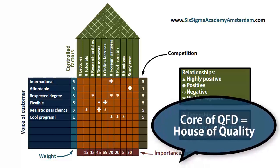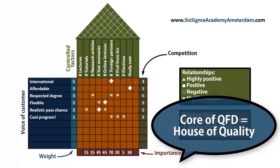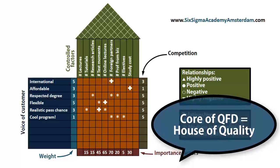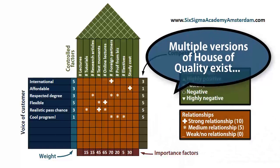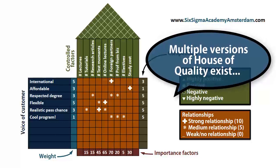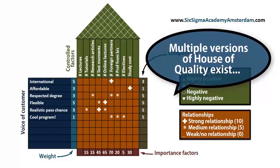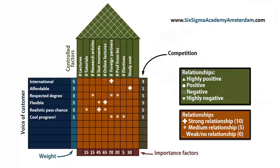Why is it called the House of Quality? Well, it kind of looks like a house. Now, if you browse various sources — books or internet — and look for the House of Quality, you'll notice that each source uses a variation that looks slightly different. The reason is simple: there is no universal definition of how a House of Quality should look, but there is a core definition, and we use that. Our house contains all the important elements, though other sources may include extra or different elements.